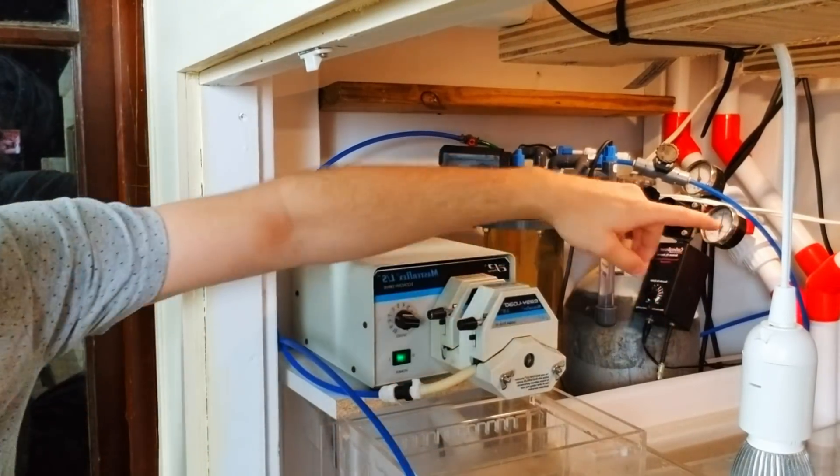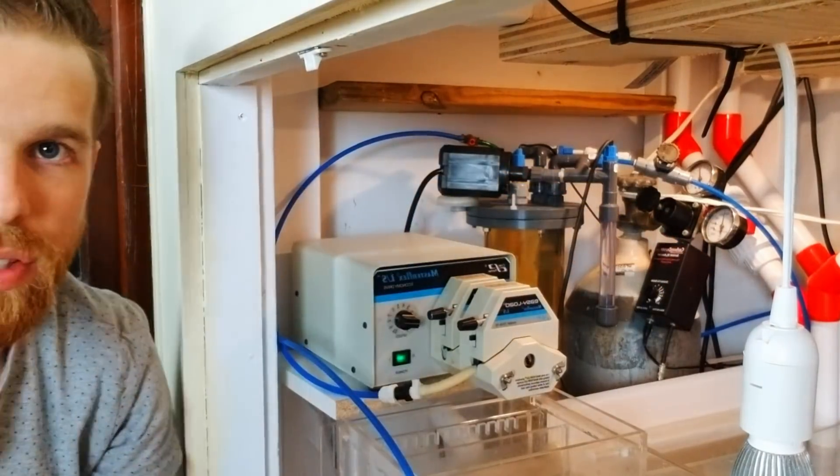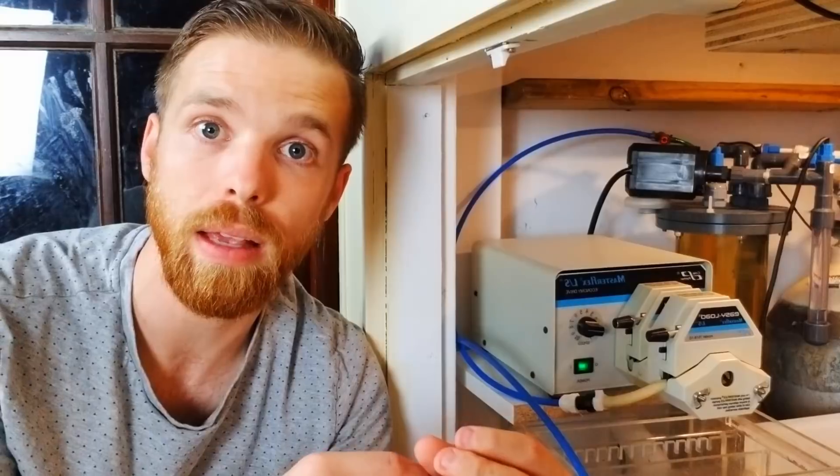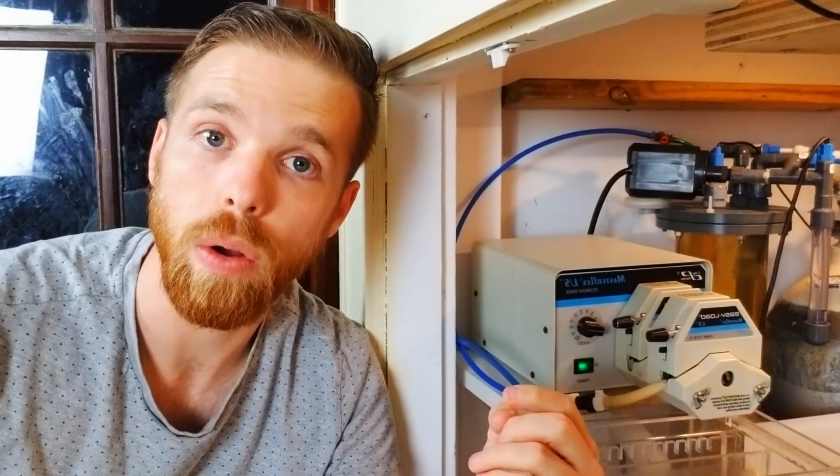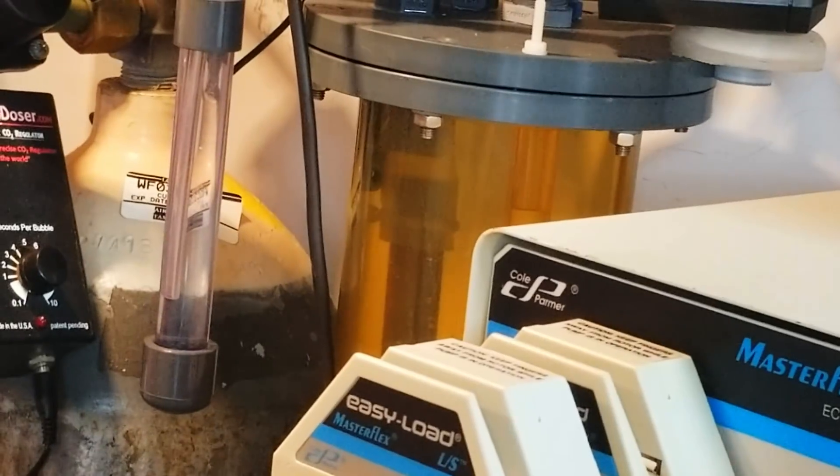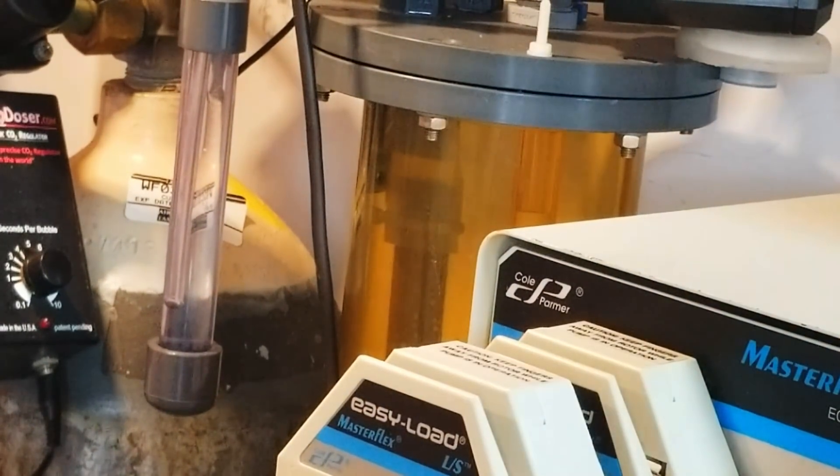So the first thing that helps me do that is this right here. This is the carbon doser. The carbon doser is an electronic solenoid or an electronic CO2 solenoid and regulator that opens and closes the solenoid at very small and precise increments to let the CO2 through that solenoid and regulator and into my reaction chamber. And you can make the bubbles larger or smaller and you can also dial it to however many seconds per bubble or bubble per seconds that you want.